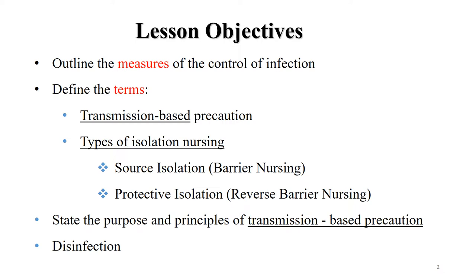Infection control - the main objective is to stop the spread of infections, especially in healthcare settings. We will be discussing two types of isolation nursing: source isolation, also known as barrier nursing, and protective isolation, also known as reverse barrier nursing. We will also look at the purpose and principles of transmission-based precaution and briefly discuss disinfection.